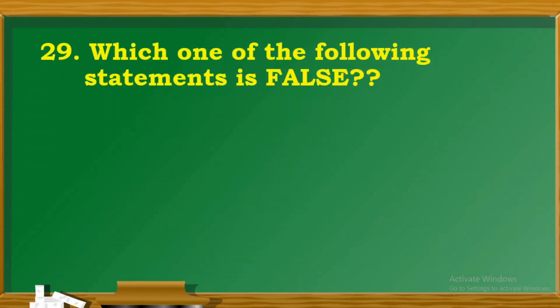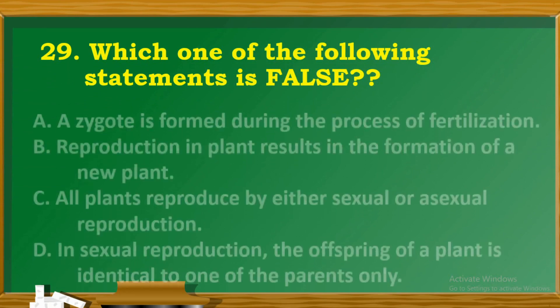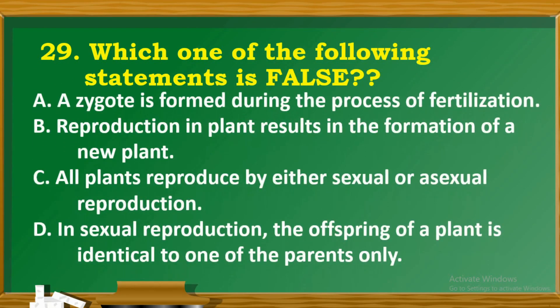Question 29: Which one of the following statements is false? A. A zygote is formed during the process of fertilization. B. Reproduction in plants results in the formation of a new plant. C. All plants can be produced by either sexual or asexual reproduction. D. In sexual reproduction, the offspring of a plant is identical to one of their parents only.